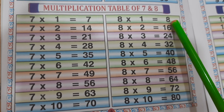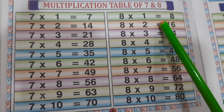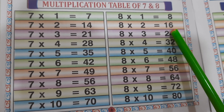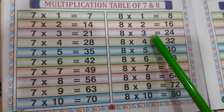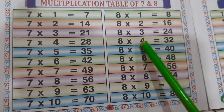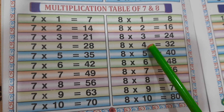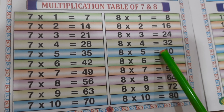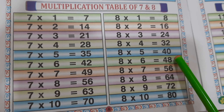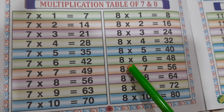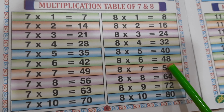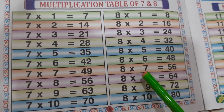8 1's are 8. 8 2's are 16. 8 3's are 24. 8 4's are 32. 8 5's are 48. 8 6's are 48.